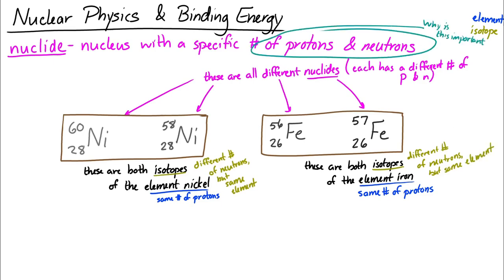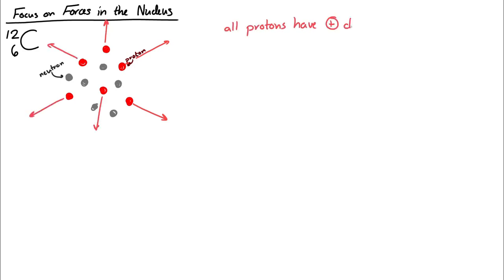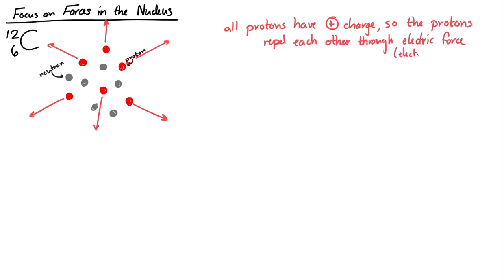Why are we concerned about the numbers of protons and neutrons? To understand, we need to think about the forces within a nucleus. I'm going to draw a cartoon of a carbon-12 nucleus — six protons and six neutrons. There's definitely a force of repulsion, because all these protons have positive charge and repel each other through the electric force, or electrostatic force, sometimes called the Coulomb force.